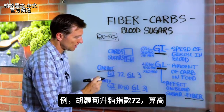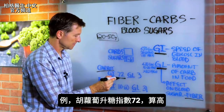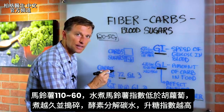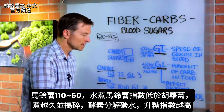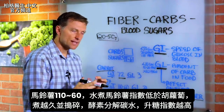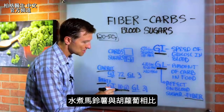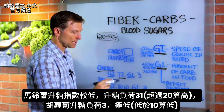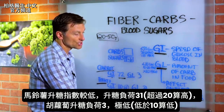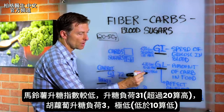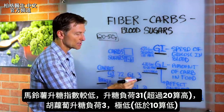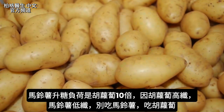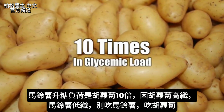Let's take a carrot, for example. The glycemic index is 72 — pretty high. Versus a potato, the glycemic index is between 60 and 110. It can actually be lower than a carrot if it's just a boiled potato. But the more that you cook it, mash it, and break down that carbohydrate with enzymes, it's going to be higher and higher. Comparing a boiled potato to a carrot: a boiled potato has a lower glycemic index, but look at the glycemic load — it's 31, which is very high. Anything over 20 is high. The glycemic load of a carrot is only 3, extremely low — anything below 10 is low. So a potato is 10 times higher than a carrot as far as the glycemic load goes.